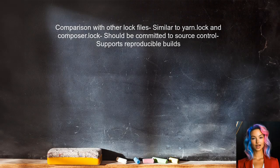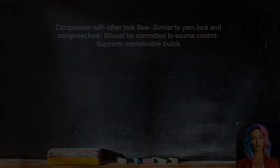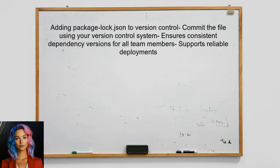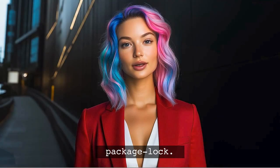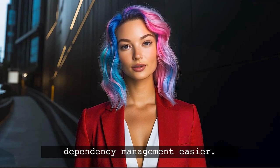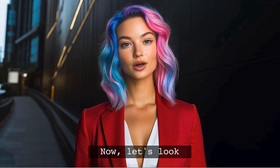You can compare the package-lock.json file to other lock files such as yarn.lock and composer.lock. Like these files, package-lock.json should be committed to source control. Finally, adding it to your version control system ensures that all team members and deployment environments use the same dependency versions. Fun fact: the package-lock.json file was introduced in npm5 to make dependency management easier — it's like having a GPS for your project dependencies, no more getting lost.